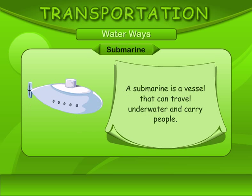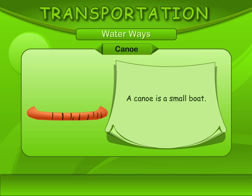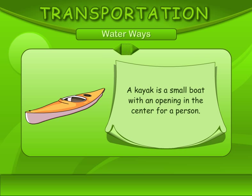A submarine is a vessel that can travel underwater and carry people. A canoe is a small boat. A kayak is a small boat with an opening in the centre for a person.